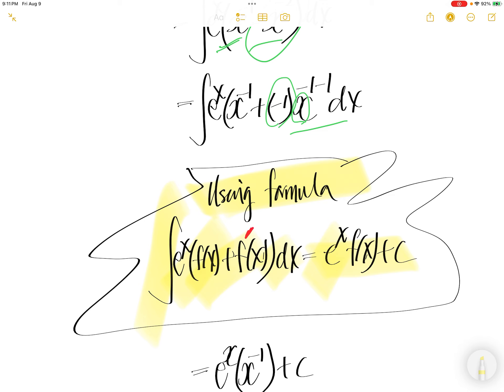Now we need to isolate which one is f of x and where is your f prime of x. The f of x here is x to power negative 1. The derivative of x to power negative 1 is negative, the negative 1 comes down,